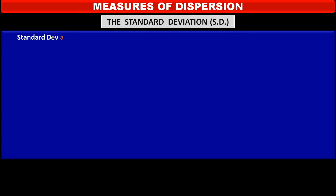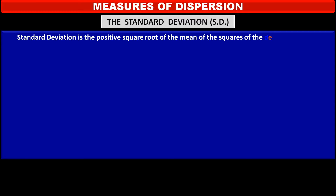Now, we have to learn the standard deviation, SD. Standard deviation is the positive square root of the mean of the squares of the deviations from mean or median of the distribution.